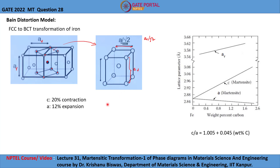This leads to lattice distortion, which is called Bain distortion. Due to this lattice distortion, there will be a change in lattice parameter, and this change with increase in carbon content is shown in this graph, where weight percentage of carbon is on the x-axis and lattice parameter is on the y-axis. Lines 1, 2, and 3 represent the lattice parameters of austenite, the C axis of martensite, and the A axis of martensite respectively.